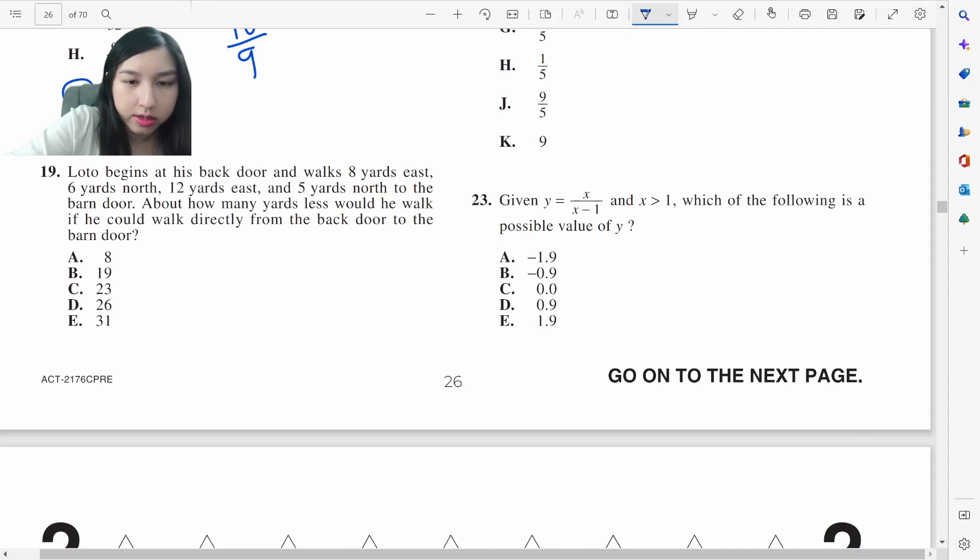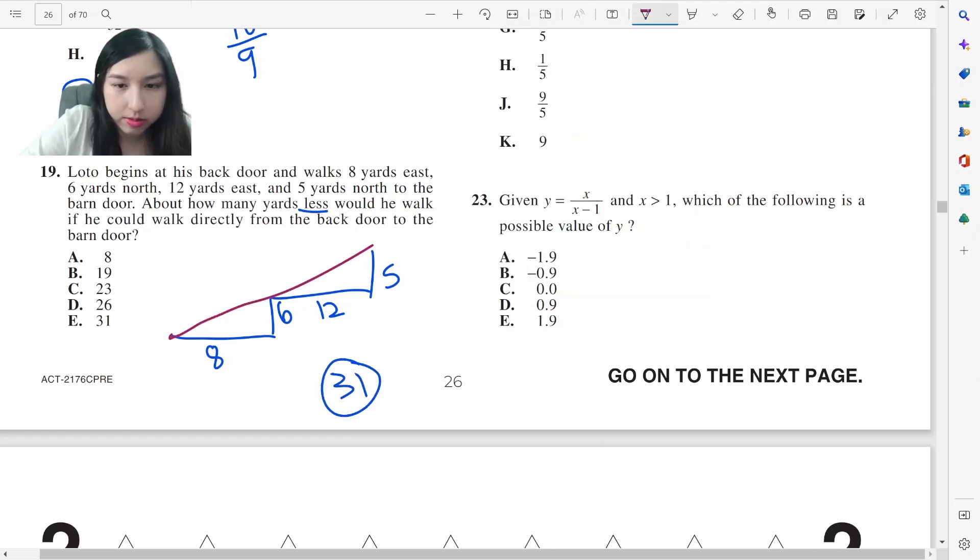8 yards east, 6 yards north, 12 yards east, 5 yards north. How much less would he walk? So altogether here is 31. But if he had walked just like this, Pythagorean theorem. 5, 12, 13, and 6, 8. This is basically 3, 4, 5, except times 2, so 10. So he would have walked about 23 here. The difference is 8.